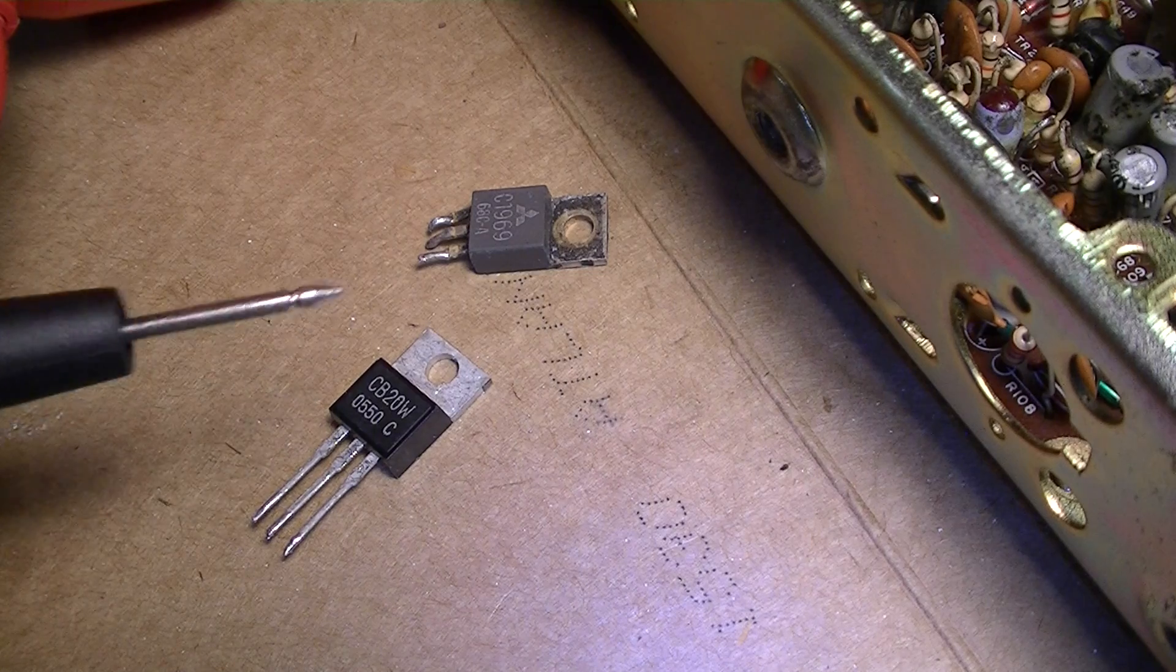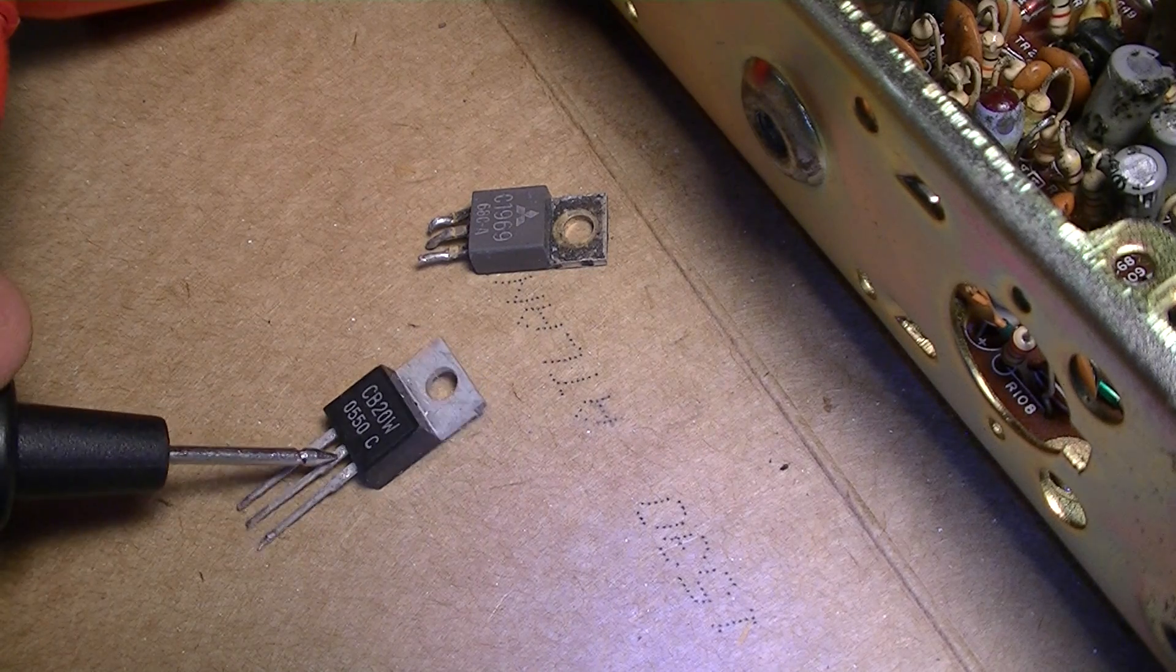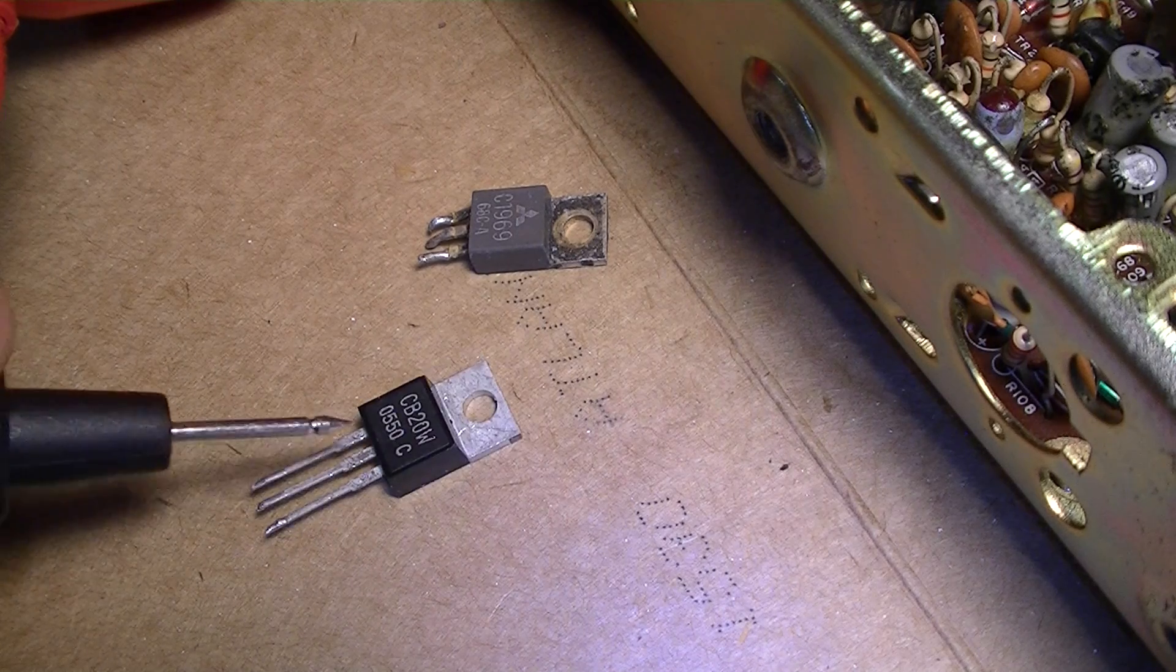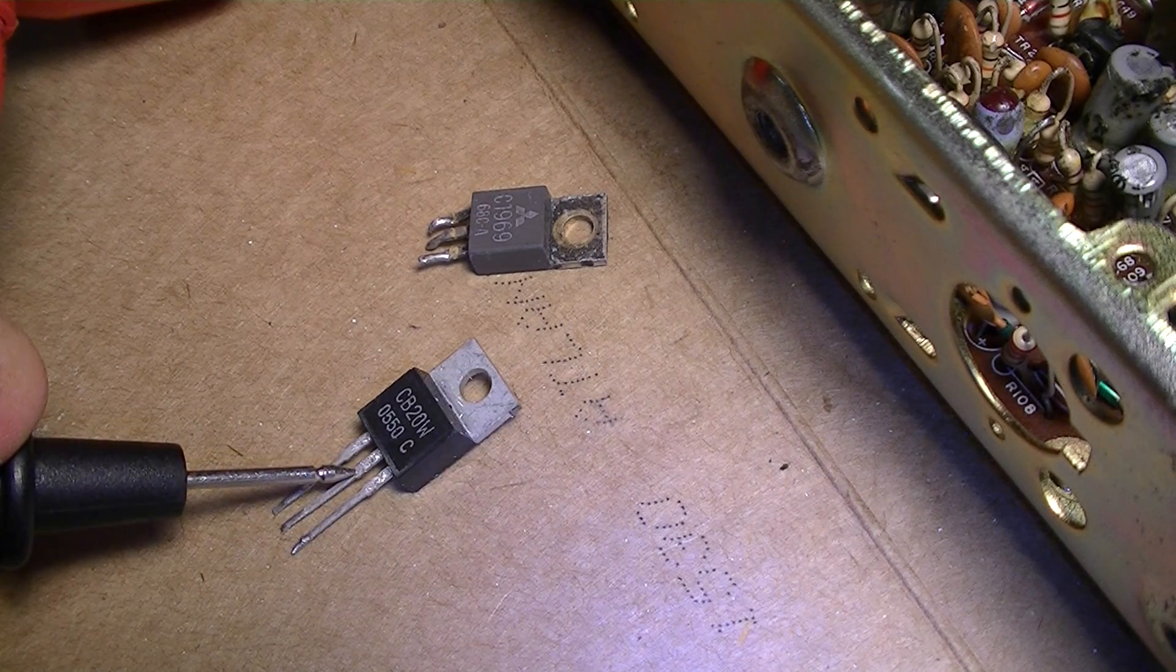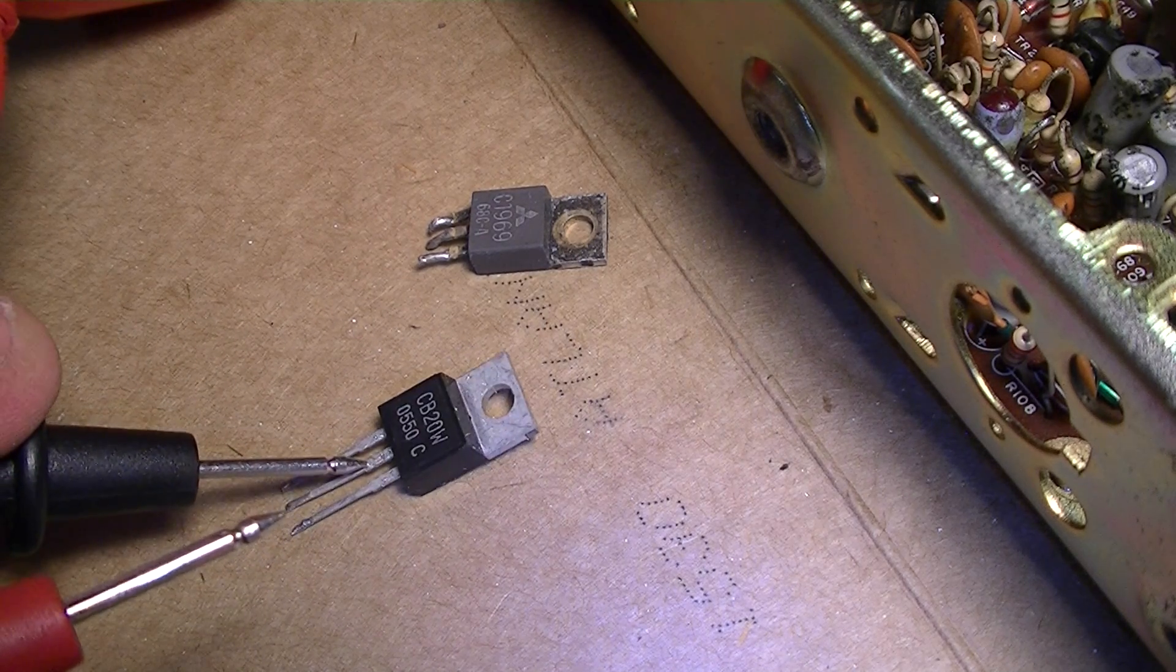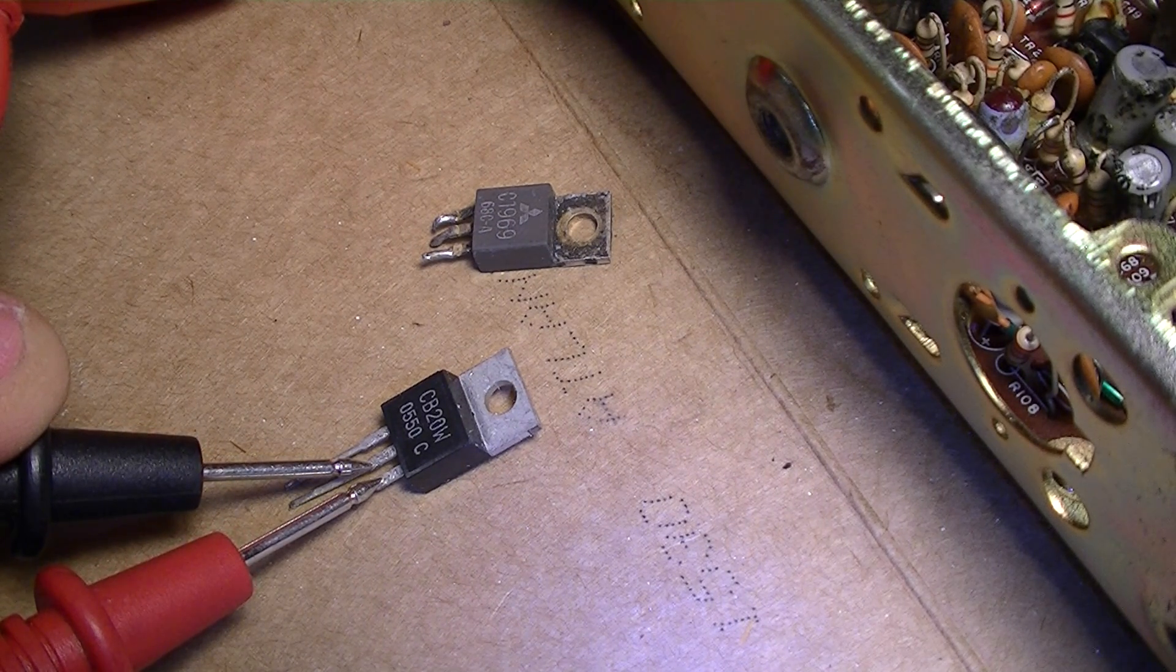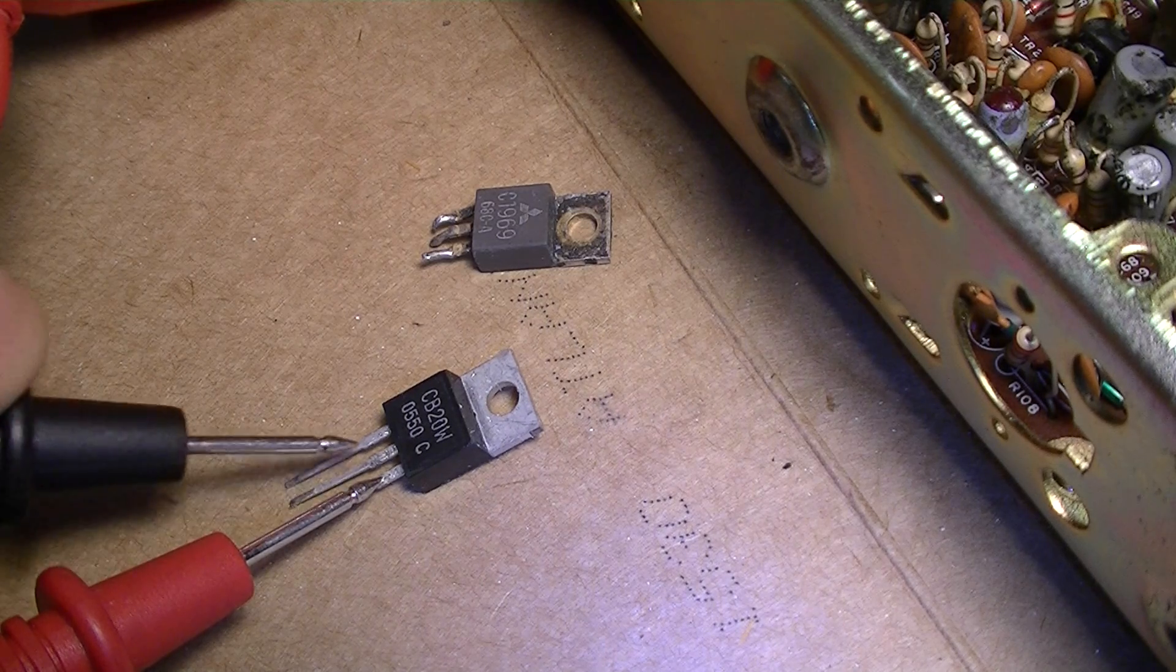So now you're gonna put the black lead in the center and the red lead to the side. My meter reads 653.